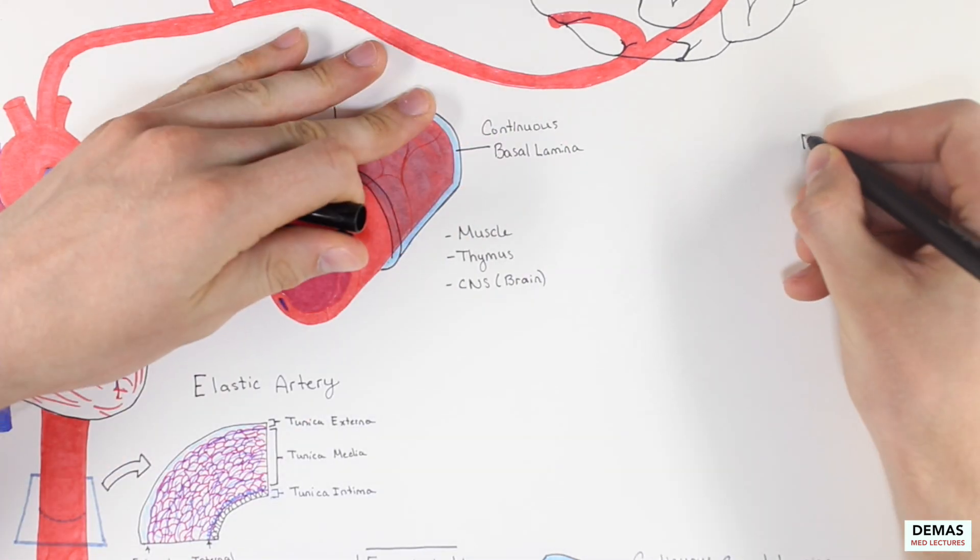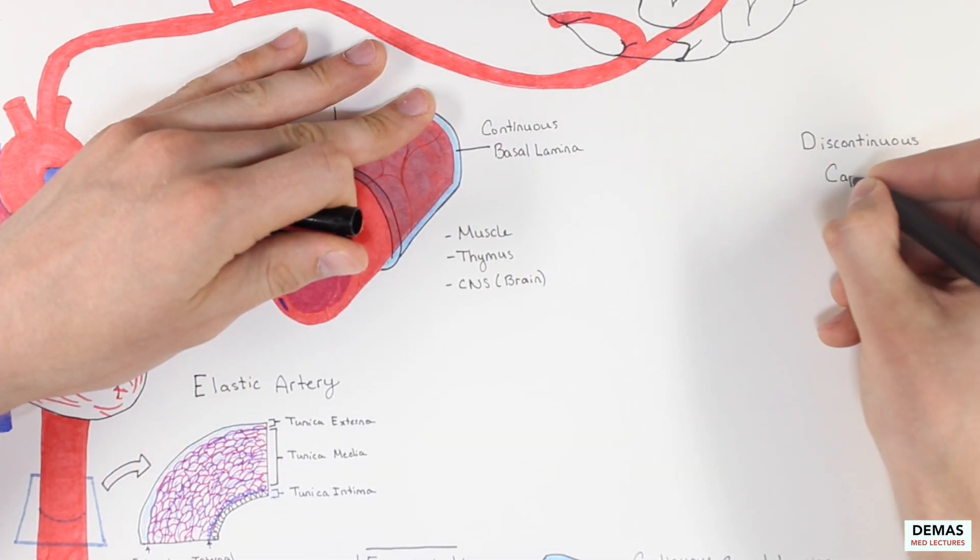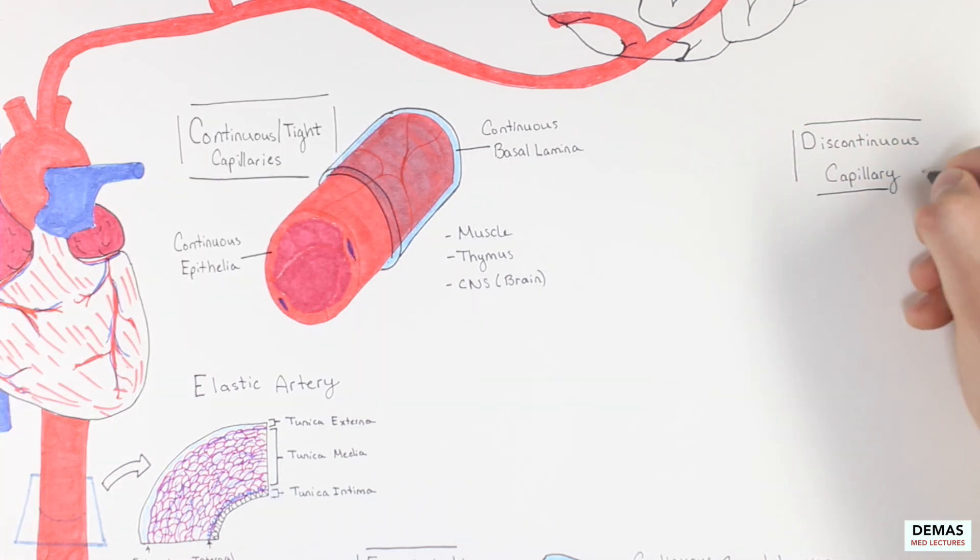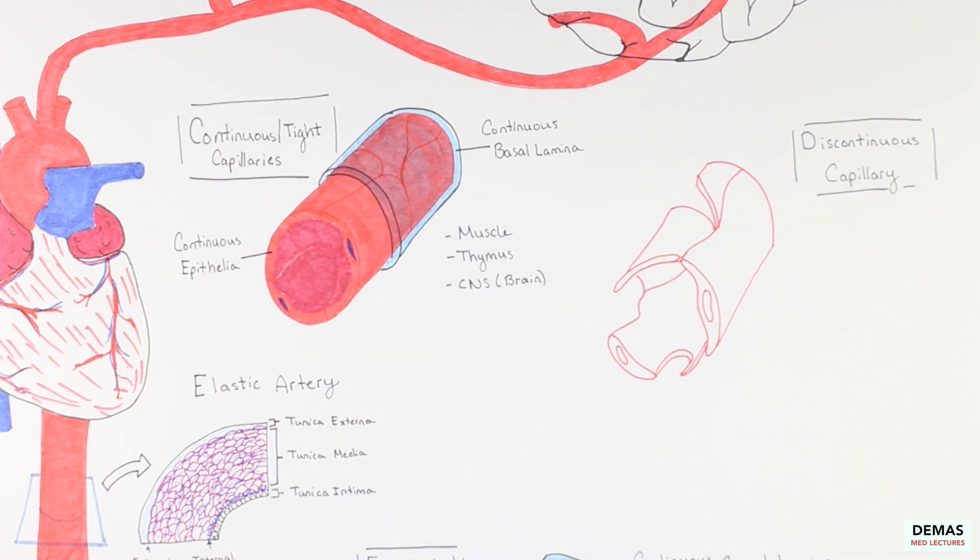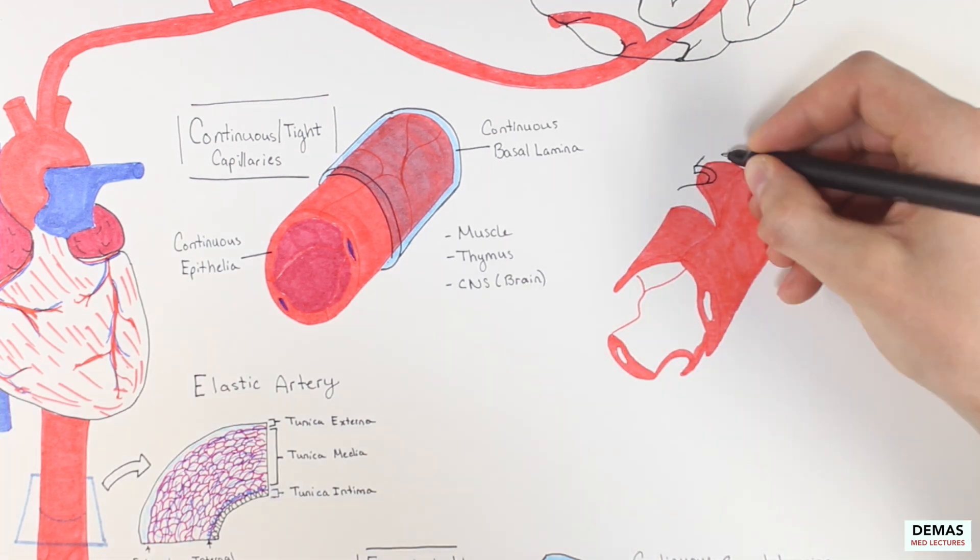Lastly, we are going to cover discontinuous capillaries. These capillaries also have a fenestrated epithelium, as shown here, and they do not contain diaphragms.